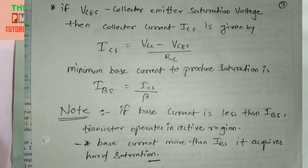If VCES is equal to collector-emitter saturation voltage, then collector current ICS is given by: ICS is equal to VCC minus VCES upon RC. Minimum base current to produce saturation is: IBS is equal to ICS upon beta.